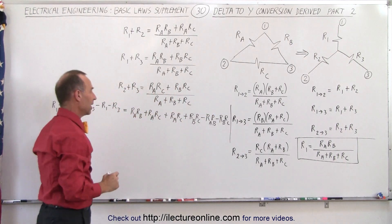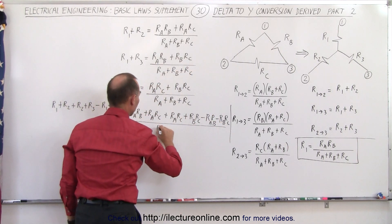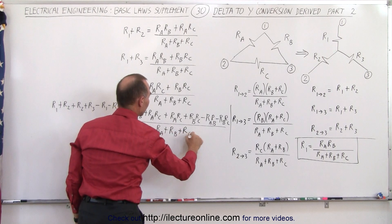And I'm running out of room there. Okay, and the whole thing divided by the common denominator of Ra plus Rb plus Rc.